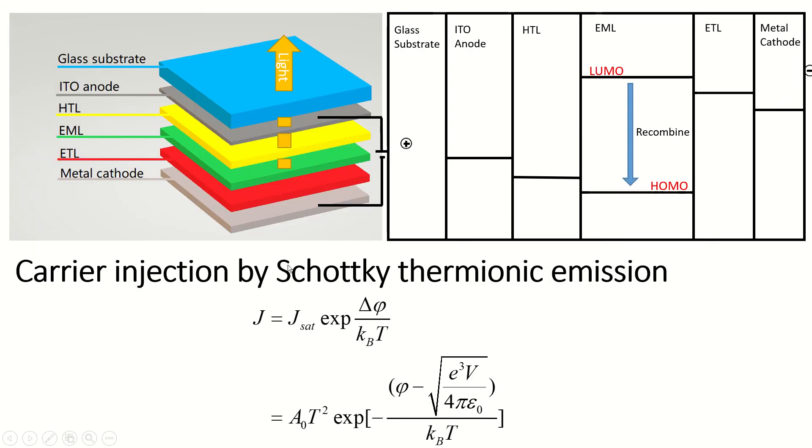First, we use the Schottky thermionic emission to calculate how much carriers are injected. There are many different models to calculate the carrier injection. We use this Schottky one because it's universal. And here is the formula. The detailed formulas can be found in our manuscript. Here we only present the results.